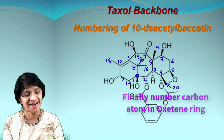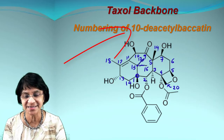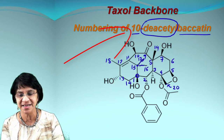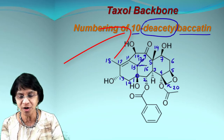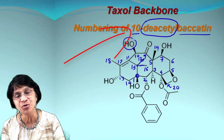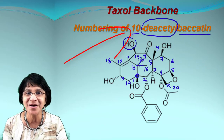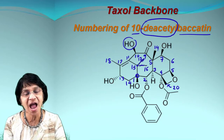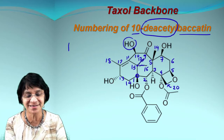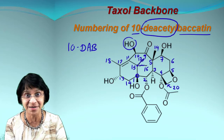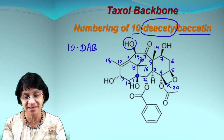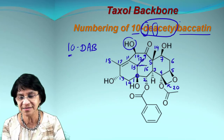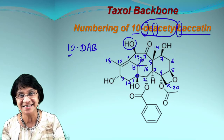Then we go back to the oxetane ring, the special four-membered ring, and that carbon is number 20. So that's the skeleton of taxol and its numbering. Now, our compound is called 10-deacetylbaccatin — the main compound is baccatin, and 'deacetyl' at position 10 means the acetyl group is removed. So what we have is an OH group at position 10. This compound has an abbreviated nickname: 10-DAB. How did we get this nickname? 10 is as it is, D is from deacetyl, A is for acetyl, and B is for the parent name baccatin.